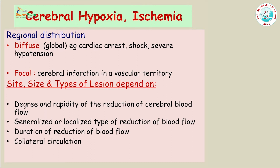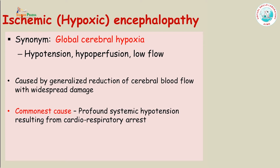Cerebral hypoxia can be diffuse or focal. Diffuse hypoxia, also known as global hypoxia, is commonly caused by cardiac arrest, shock, or severe hypotension, and has characteristic gross and microscopic findings. Focal hypoxia occurs because of cerebral infarction in a typical vascular territory, and the amount of damage depends on the site, size, type of lesion, duration of reduced blood flow, and whether collateral circulation was present.